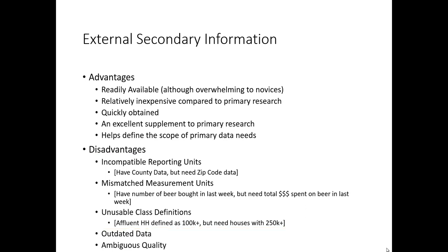Oftentimes, external secondary information will come in an incompatible reporting unit. For example, maybe you have information about craft beer drinkers at the county level through an external source — say, San Diego County — but because you plan on doing a direct mail campaign, you really need data at the zip code level. Without that level of detail, the incompatible reporting unit undermines the usefulness of the secondary information for your marketing research question.